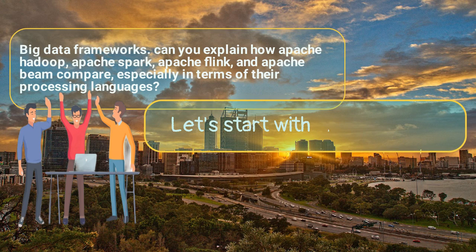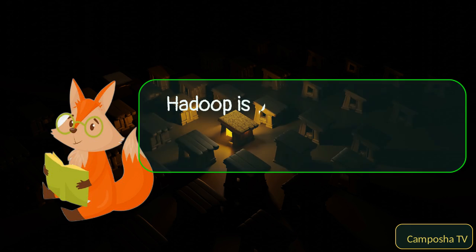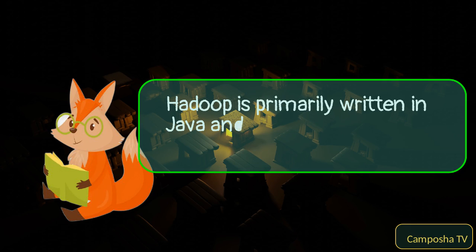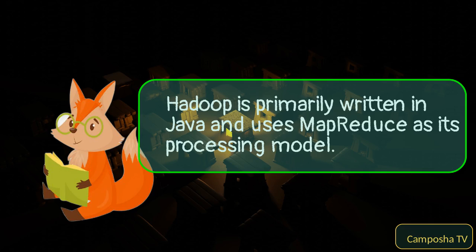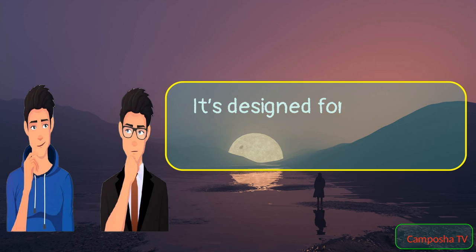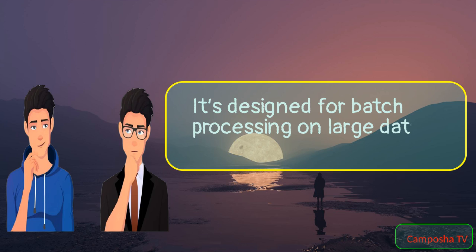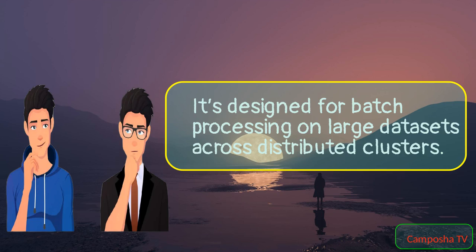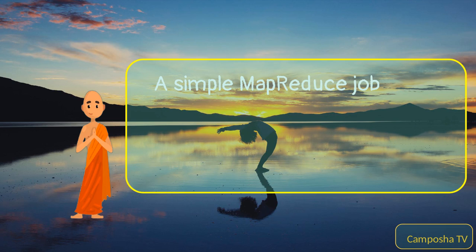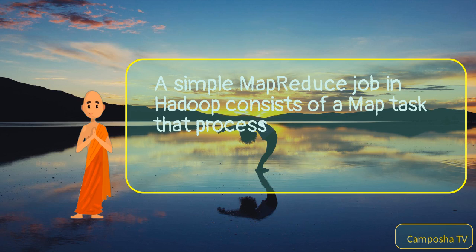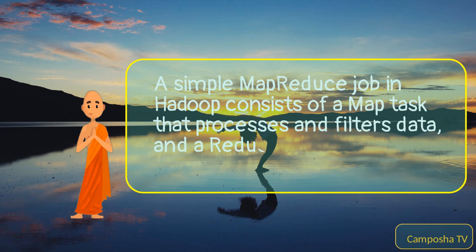Let's start with Apache Hadoop. Hadoop is primarily written in Java and uses MapReduce as its processing model. It's designed for batch processing on large datasets across distributed clusters. A simple MapReduce job in Hadoop consists of a map task that processes and filters data, and a reduce task that performs a summary operation.